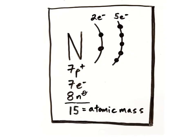However, a nitrogen atom with eight neutrons will have a mass number of fifteen — seven protons plus eight neutrons.